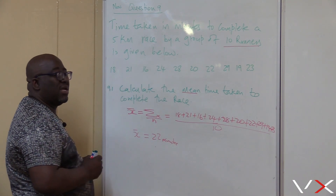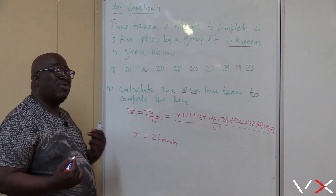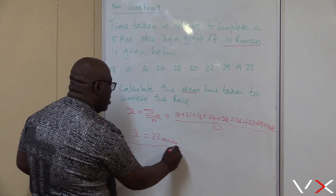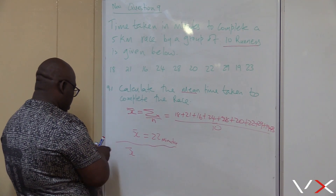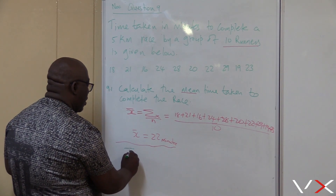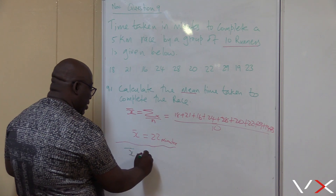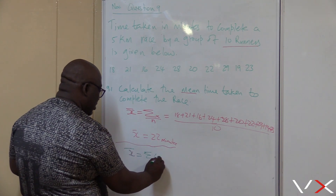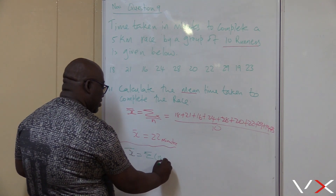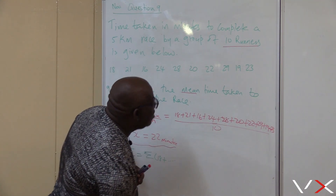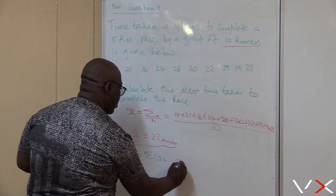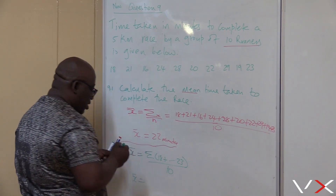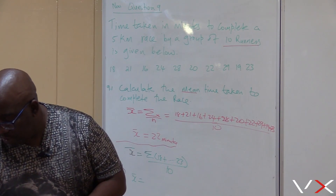So the average time taken by these runners is 22 minutes. Let me show you another way. X bar equals the sum from the first value, which is 18, plus all of them up to the last one, which is 23, divided by 10. Push this in the calculator.